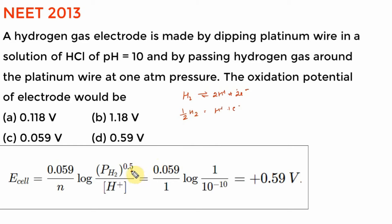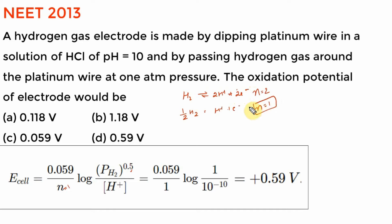E_cell equals this setup. pH = 10, so [H⁺] = 10⁻¹⁰. You can calculate 0.59 volt. Remember this particular number — it keeps coming over and over again in NEET. Even if you can't remember, you can always calculate it.